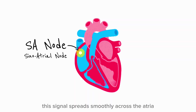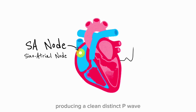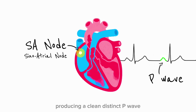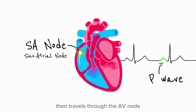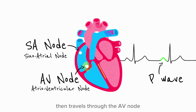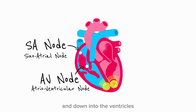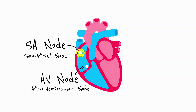This signal spreads smoothly across the atria, producing a clean, distinct P wave, then travels through the AV node and down into the ventricles, resulting in a coordinated heartbeat.